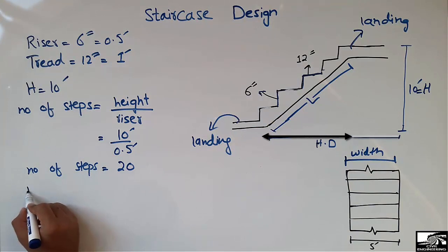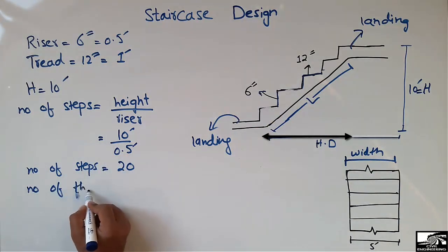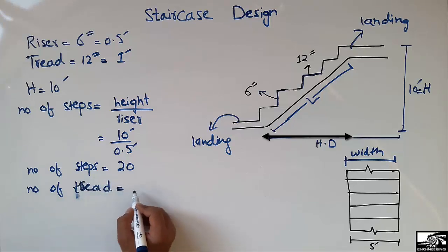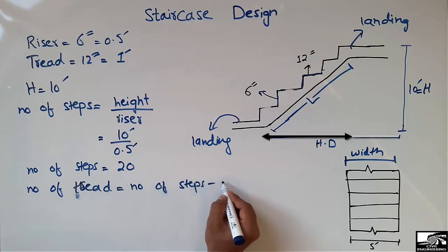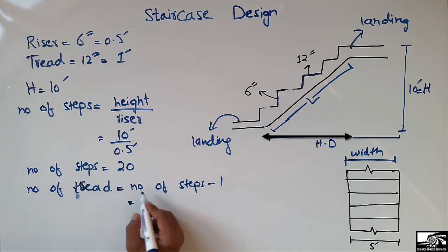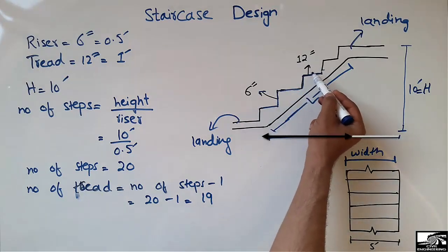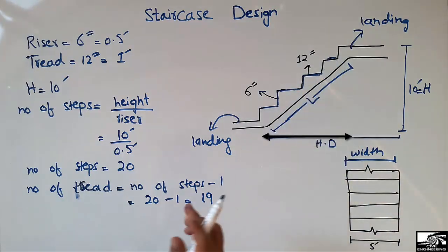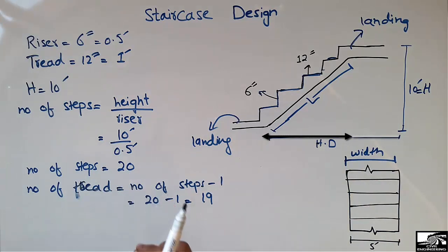Now, how to calculate the number of treads — there is a simple formula: number of treads equals number of steps minus 1. The number of steps is 20, so 20 minus 1 gives us 19 treads. Note that the number of risers is always greater by one than the number of treads.